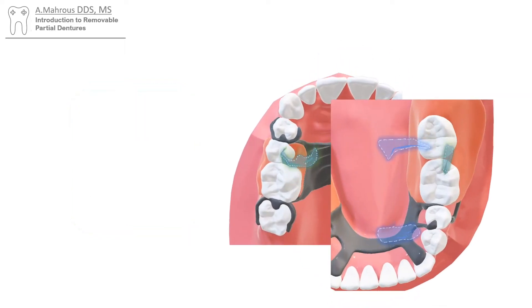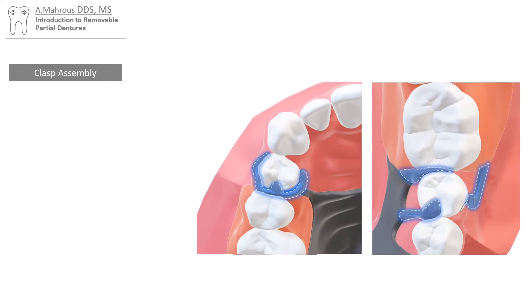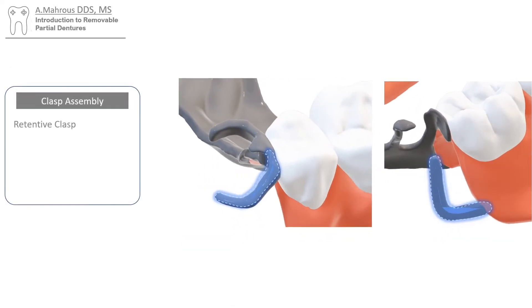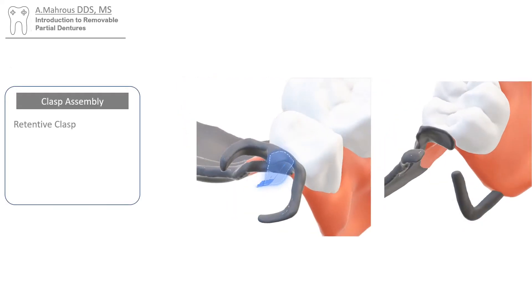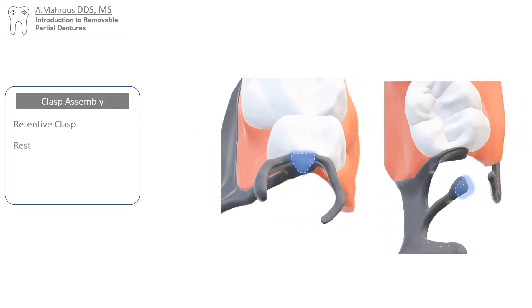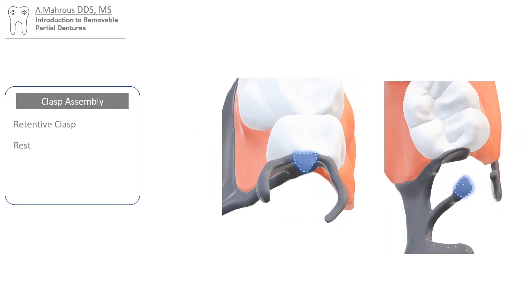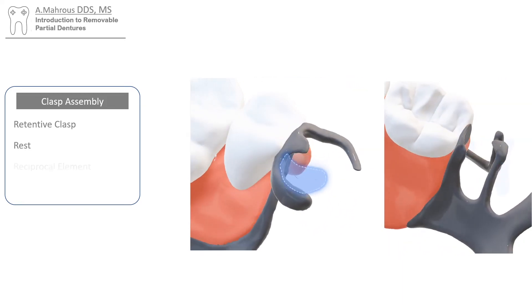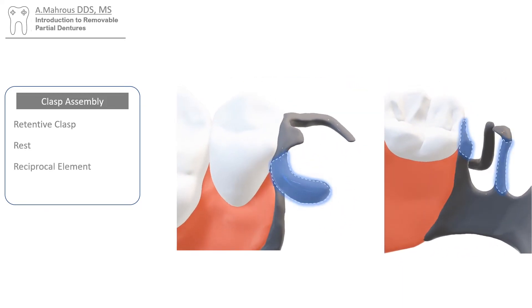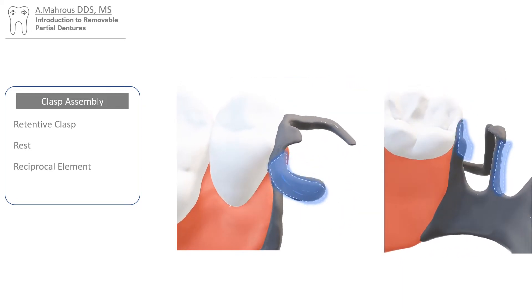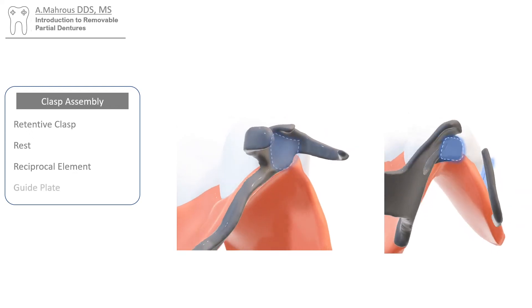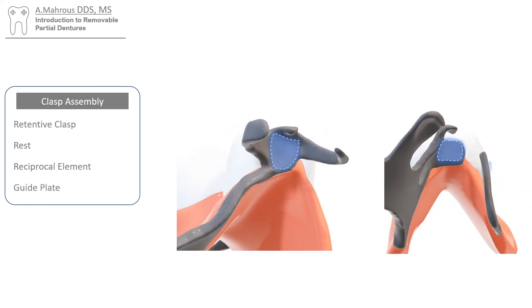One of those major components are clasp assemblies. Clasp assemblies are made out of a retentive clasp, a rest, a reciprocal element, and a guide plate.